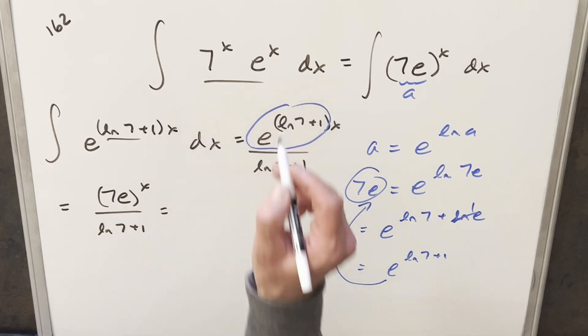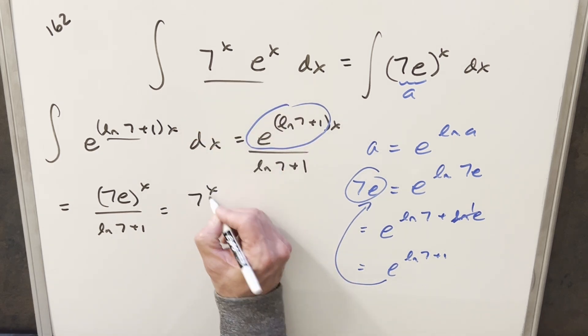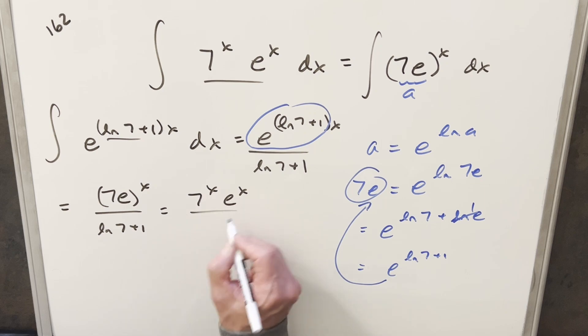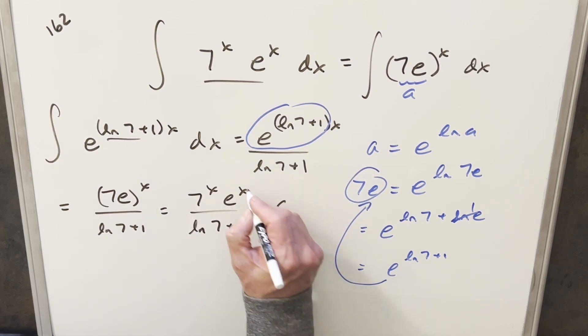Actually, let's get it all the way back to this form, just to be polite. We don't really have to, but let's write it this way: 7 to the x times e to the x over ln 7 plus 1, plus c. And that's it.